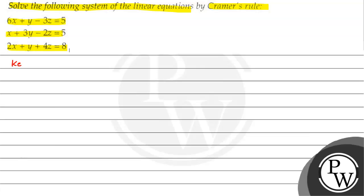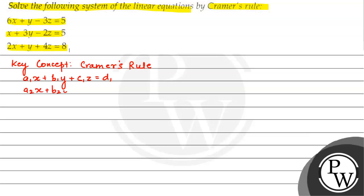Here we have a key concept. We have to use Cramer's rule. The general form is: A1x plus B1y plus C1z is equal to D1, and A2x plus B2y plus C2z is equal to D2, and A3x plus B3y plus C3z is equal to D3.